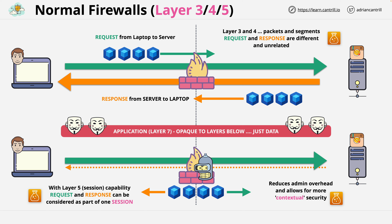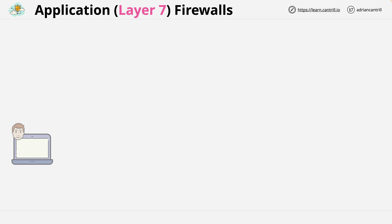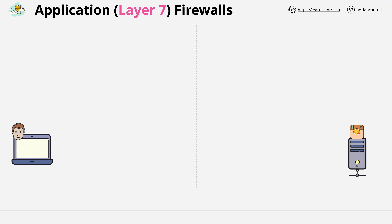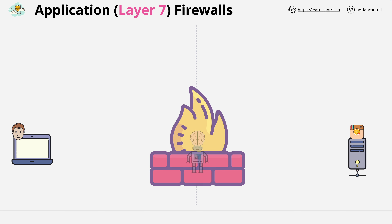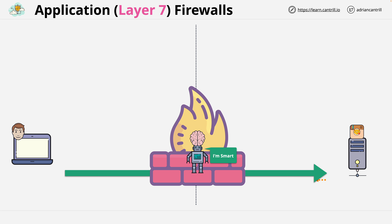Layer 7 firewalls fix many of these limitations. Consider the same architecture where we have a client on the left and a server or application on the right that we're trying to protect. In the middle we have a layer 7 firewall — and to help you remember it's a layer 7 firewall, let's add a smart robot. With this firewall we still have the same flow of packets and segments, and a layer 7 firewall can understand all of the lower layers but adds additional capabilities.